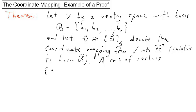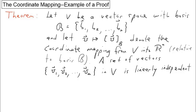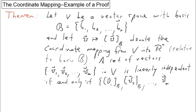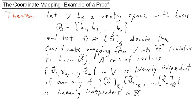A set of vectors v1, v2, all the way down to v sub m in v is linearly independent if and only if the coordinate vectors v1 sub b, v2 sub b, all the way down to vm sub b form a linearly independent set in Rn.